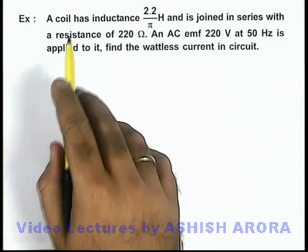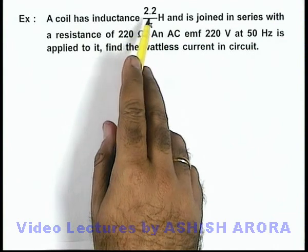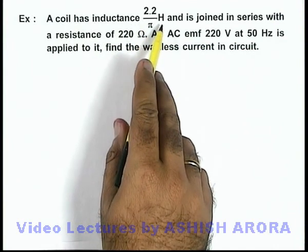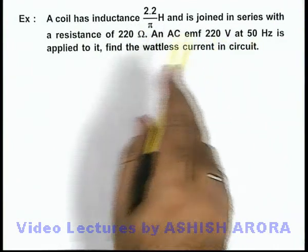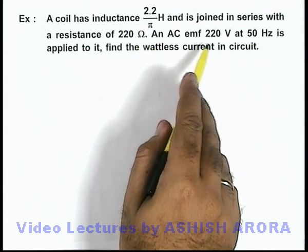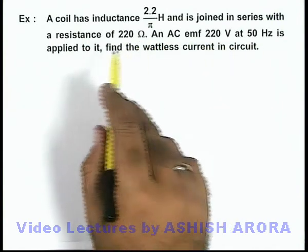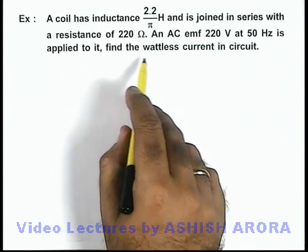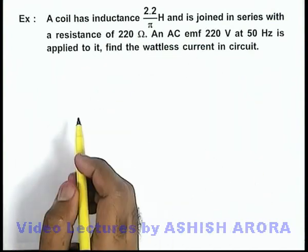In this example, we are given that a coil has an inductance of 2.2 by pi henry. It is joined in series with a resistance of 220 ohms, and an AC emf of 220 volt at 50 hertz is applied to it. We are asked to find the wattless current in the circuit.